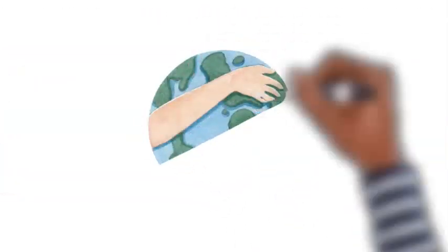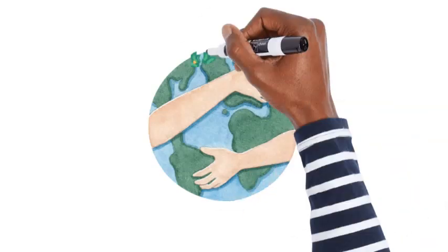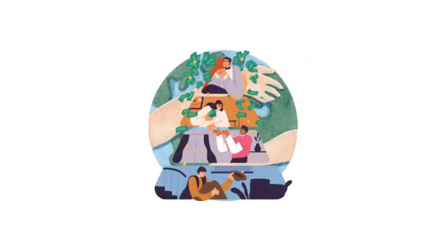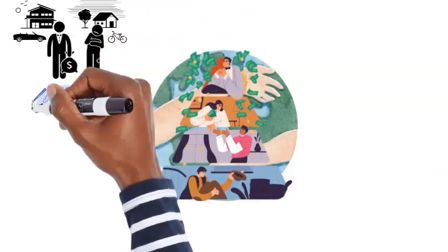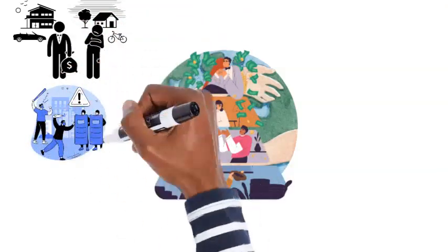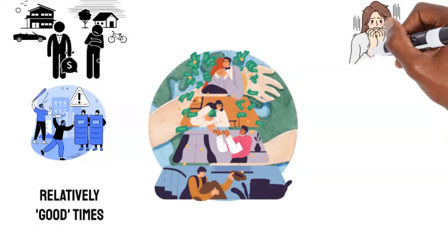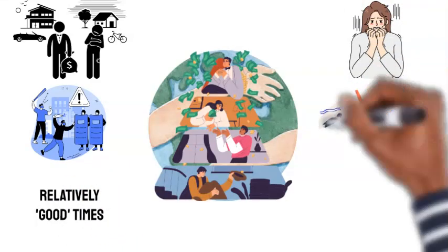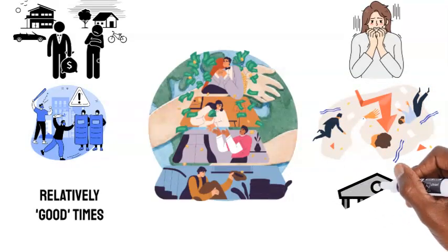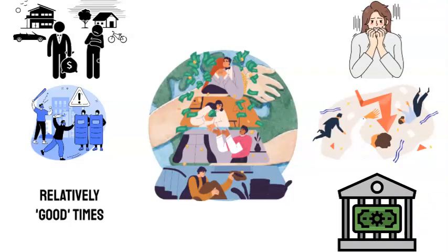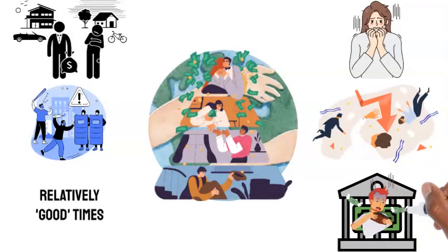Moreover, the world today grapples with significant wealth disparities. The rich-poor divide is more pronounced than ever. If we're witnessing political and social unrest in these relatively good times, it's daunting to imagine the scenario when an economic downturn, which is inevitable, hits us, especially when central banks might lack the means to counteract effectively.